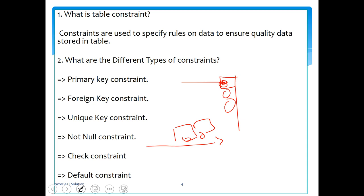Constraint is a rule, a set of rules. If you violate that rule, the system enforces it. Constraints are used to specify rules on data to ensure quality of data stored in the table.